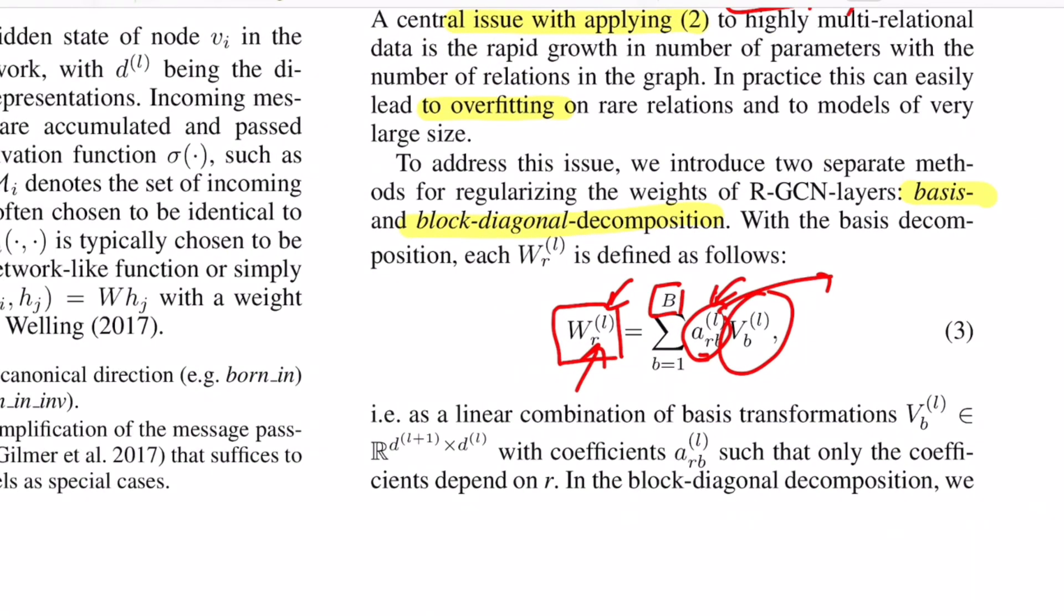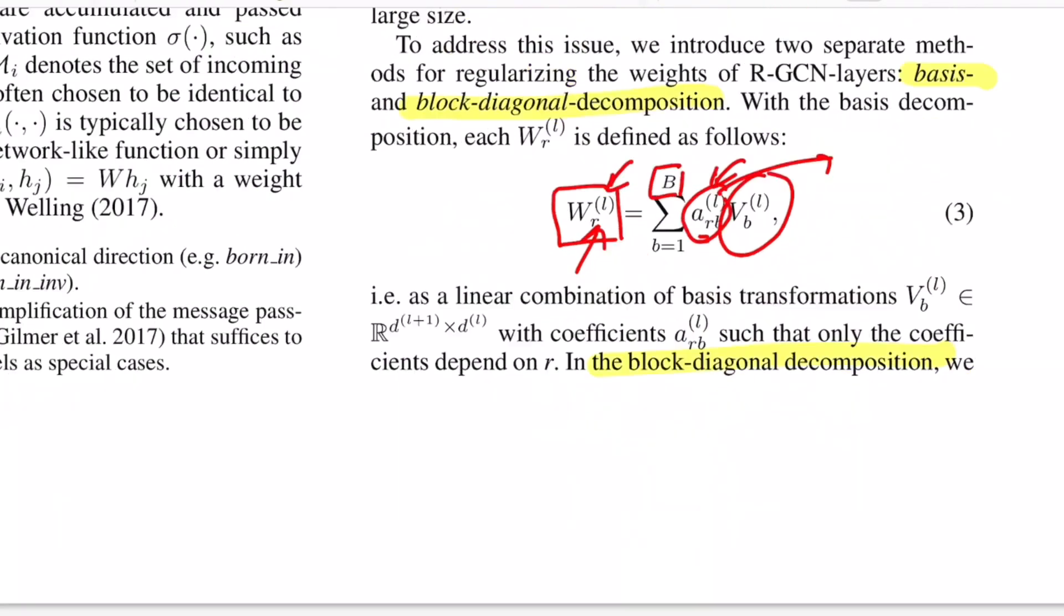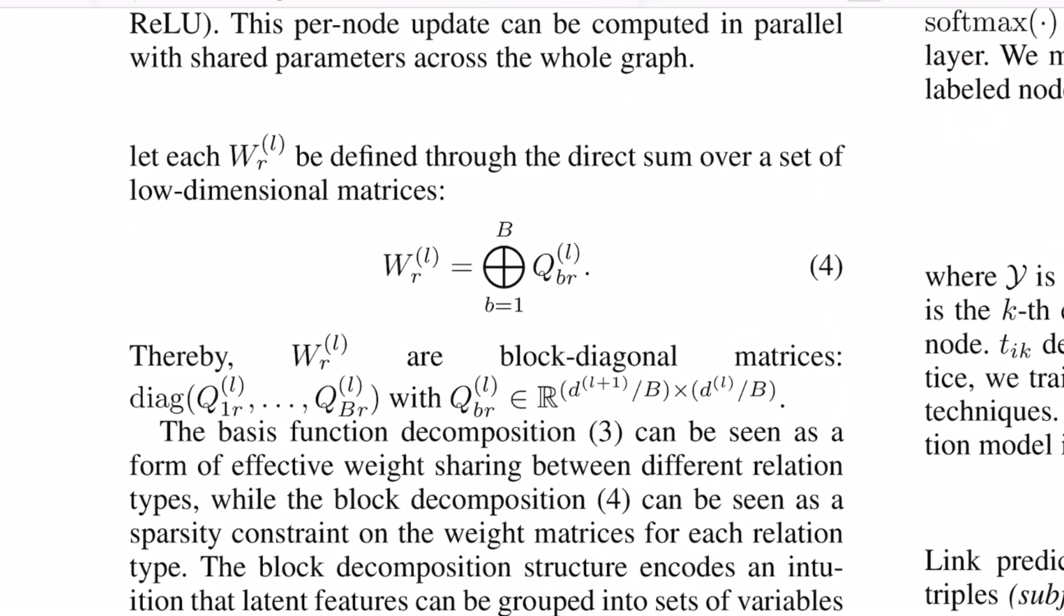Okay. So now talking about the second method which is block diagonal decomposition. So here the idea is for every weight matrix that you need to learn for every level and for every relation, you represent it as a block diagonal matrix. So for example, if this was the matrix that you had, let's say it's four cross four, 1, 2, 3, 4. Okay. So yeah, this is the matrix that you need to have.